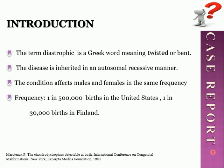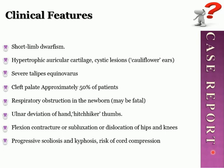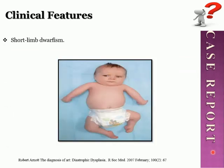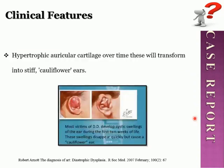Finland has the highest incidence worldwide. Regarding clinical features of this disease, we will go through them one by one. First, patients have short limb dwarfism, as you can see in this patient. They also have hypertrophic auricular cartilage which over time becomes stiff, known as cauliflower ears.